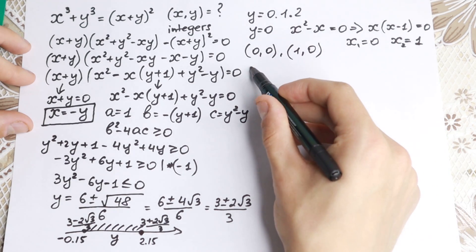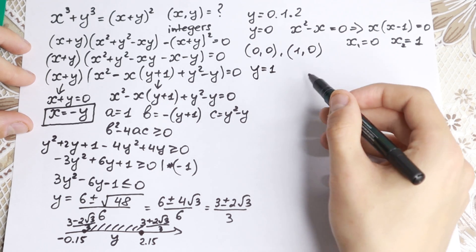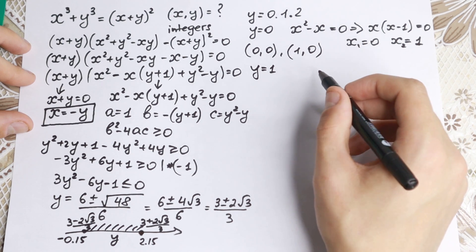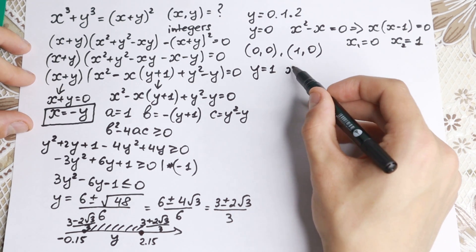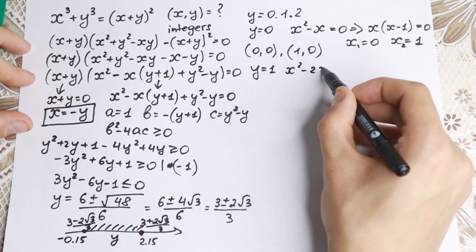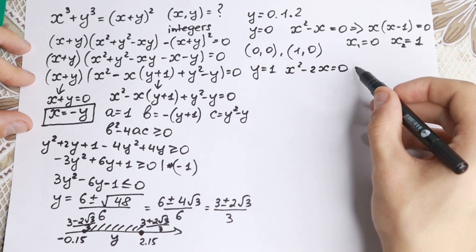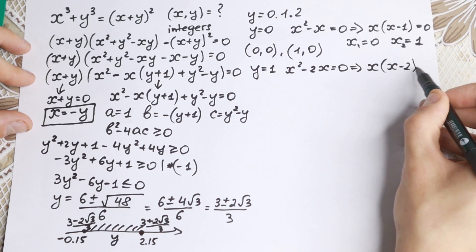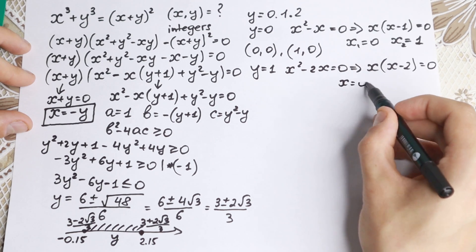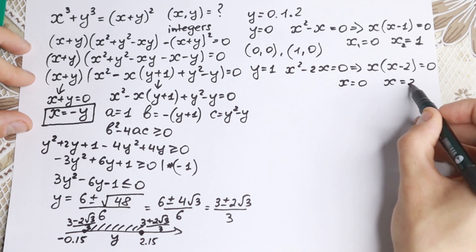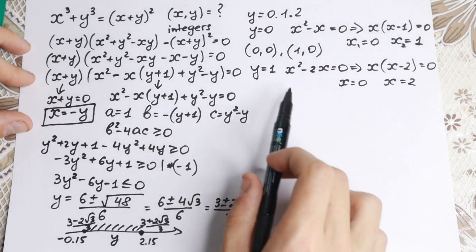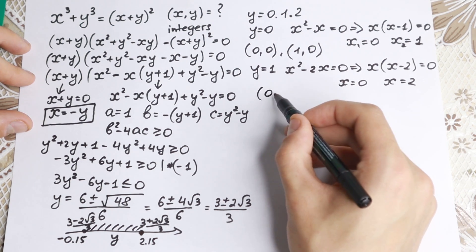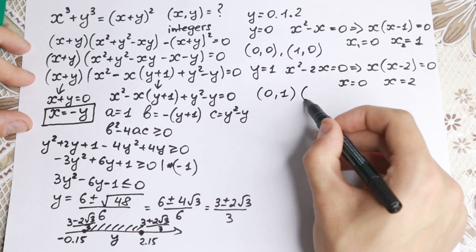Let's go next. We have y equal to 1. If y equal to 1, what equation will we have? Plugging this in, we have x² minus 2x equal to 0. Completely the same as the first case: x times (x minus 2) equal to 0. So x equal to 0 or x equal to 2. So we have two pairs with y equal to 1: (0, 1) and (2, 1).